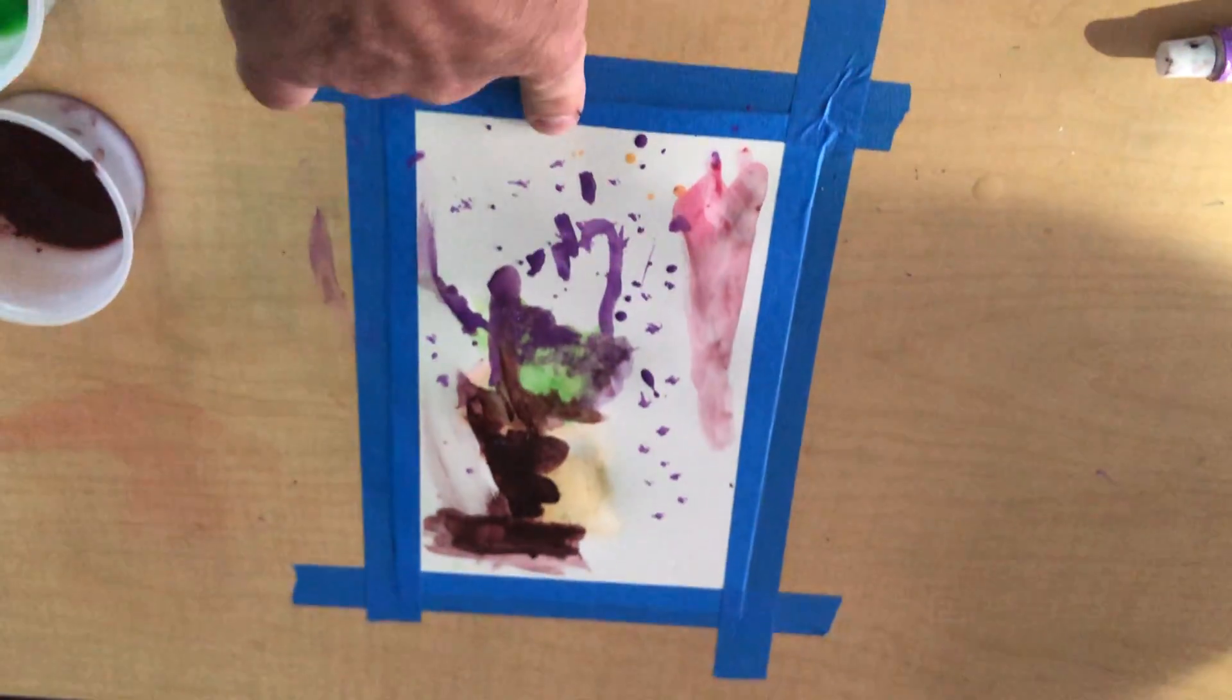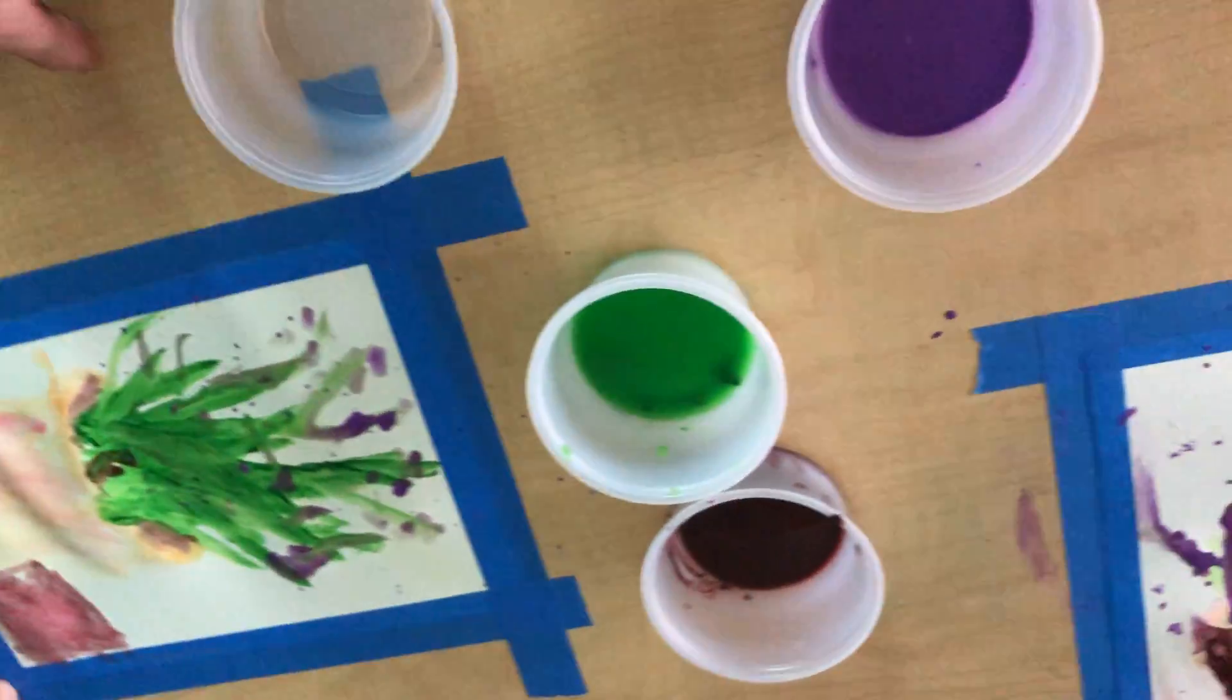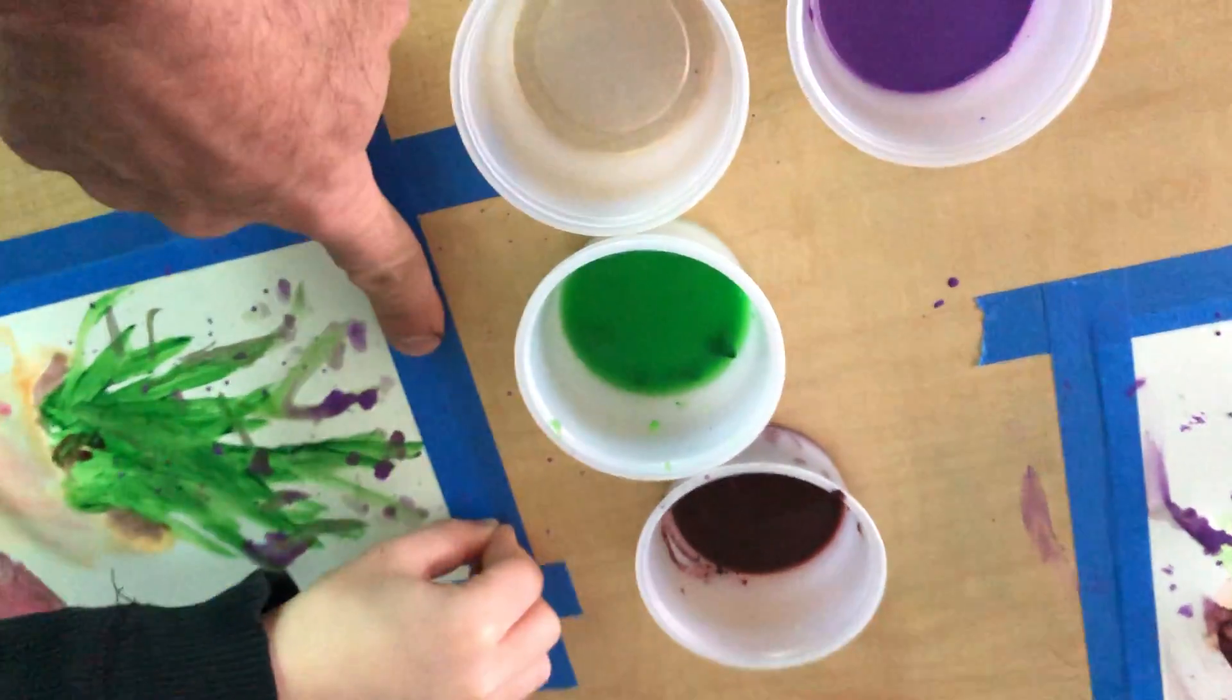But what I usually do is I kind of cut them in half, or you can even cut them in quarters to save a little bit on the money. And then we just put down painters tape, so that way whenever we take it off, we can have a nice little frame. Okay, let's see, get this back up and going.